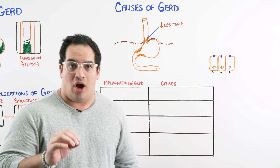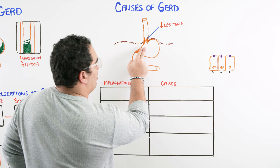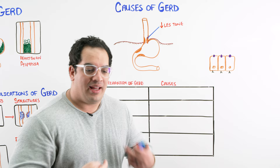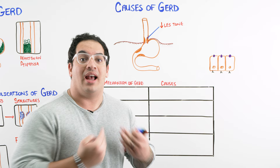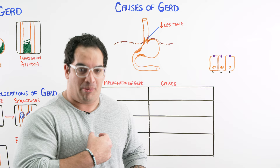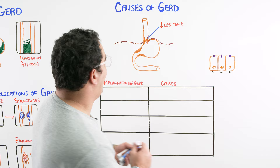Another mechanism is a defect at the esophageal hiatus. The esophagus is supposed to pass through the esophageal hiatus, but in certain patients there's a defect and it slides upward above the hiatus. This is a very significant problem for GERD — it's called a hiatal hernia.